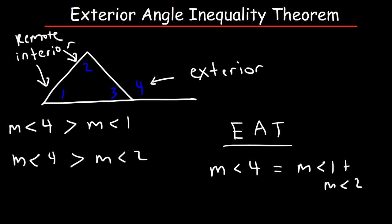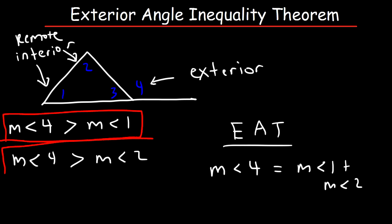The exterior angle inequality theorem states that the exterior angle, angle 4, is going to be greater than angle 1 or angle 2 — any one of the remote interior angles. And it makes sense: because if angle 4 is equal to angle 1 plus angle 2, angle 4 has to be greater than angle 1 and angle 2 separately.